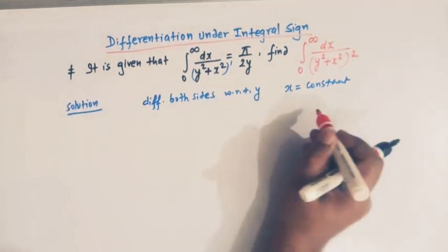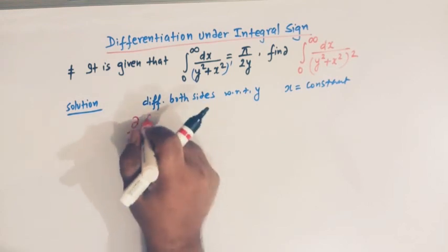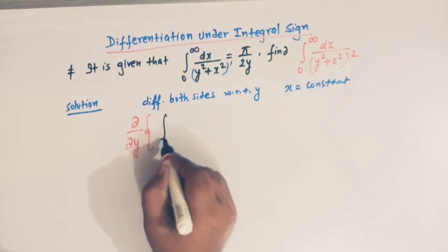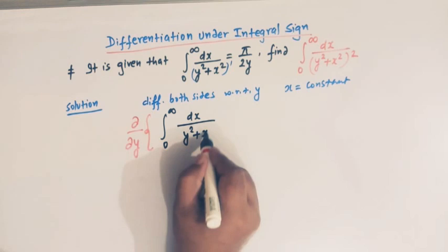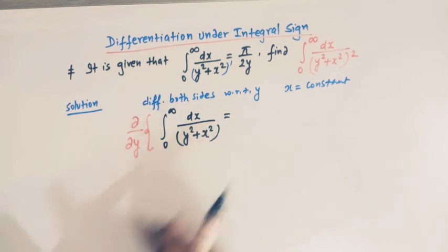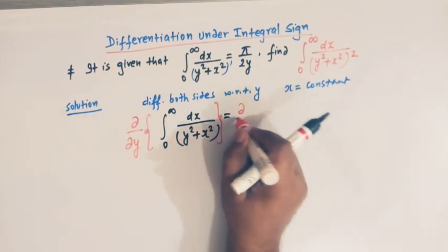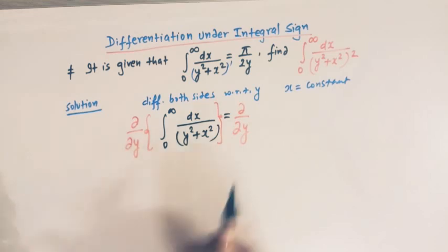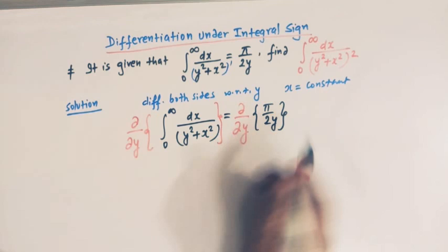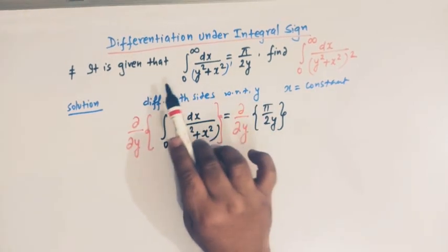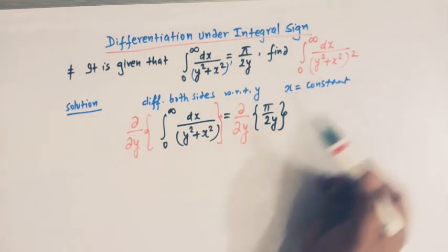We write del over del y of the integral from 0 to infinity of dx over (y squared plus x squared), and on the right side we write del over del y of pi over 2y. So we are partially differentiating both sides with respect to y, keeping x constant.